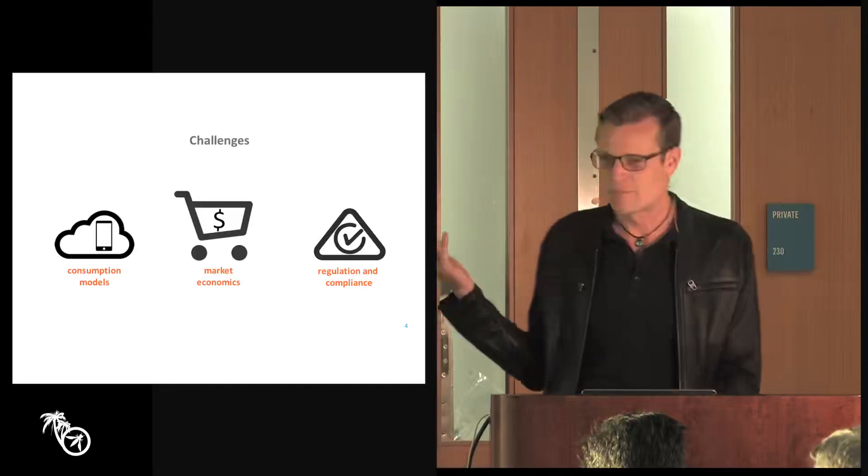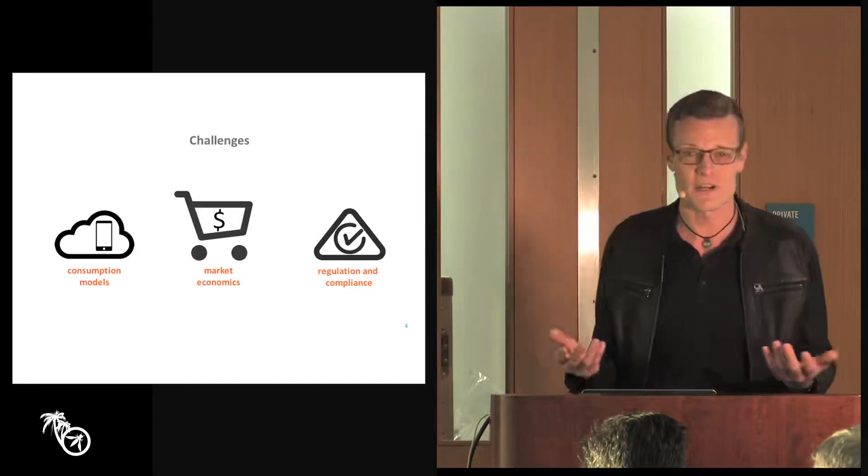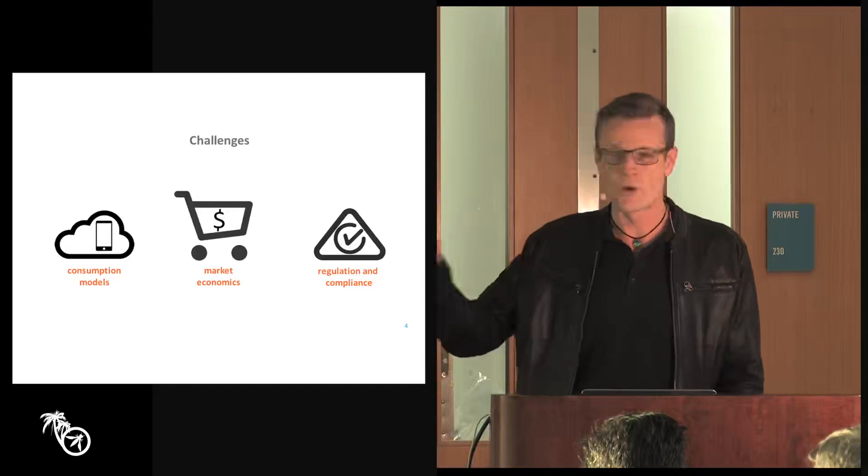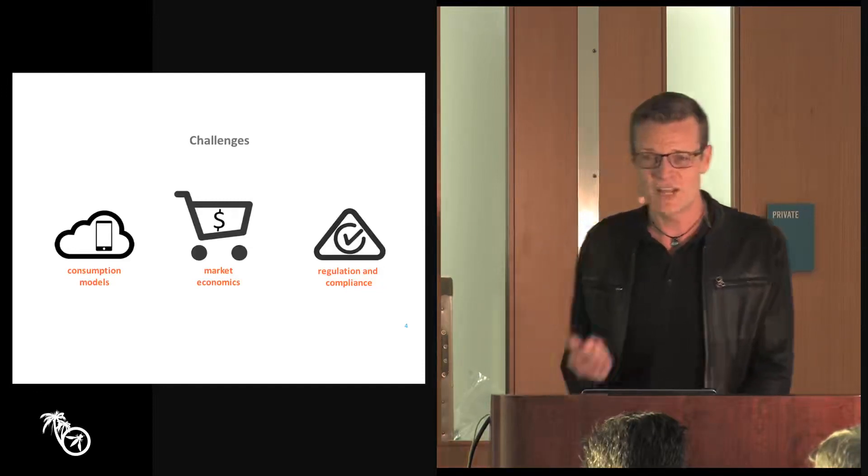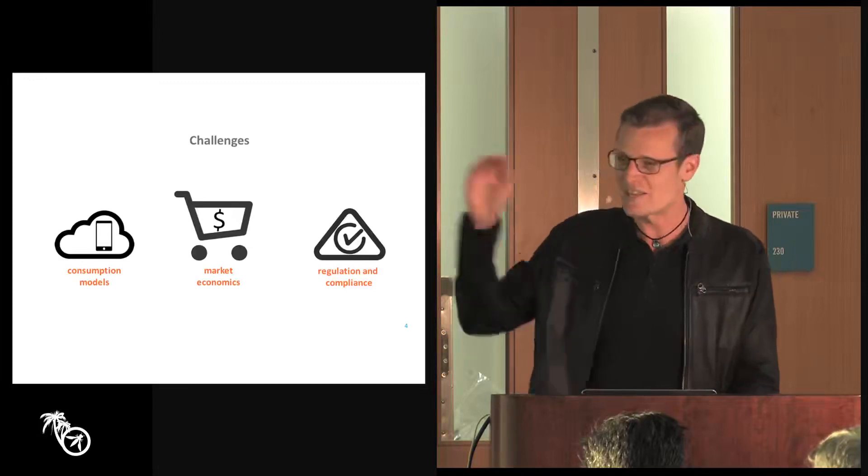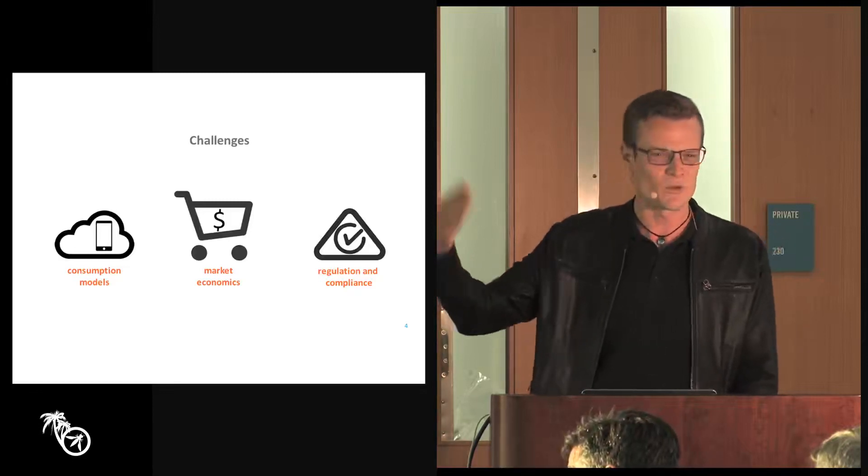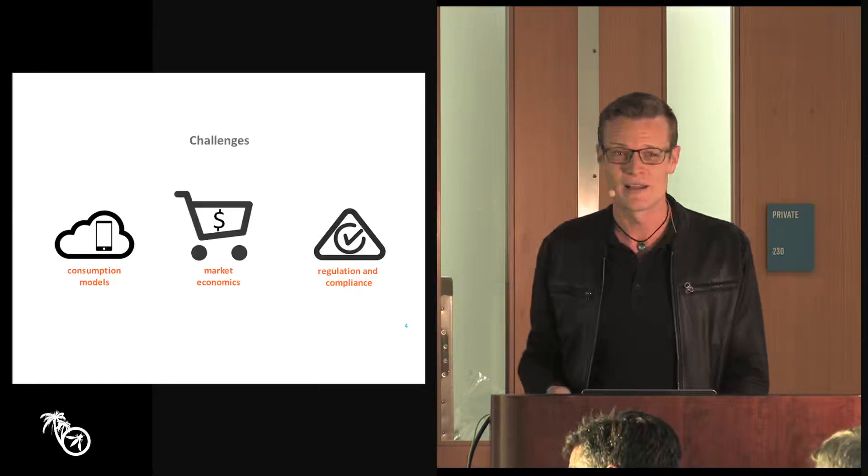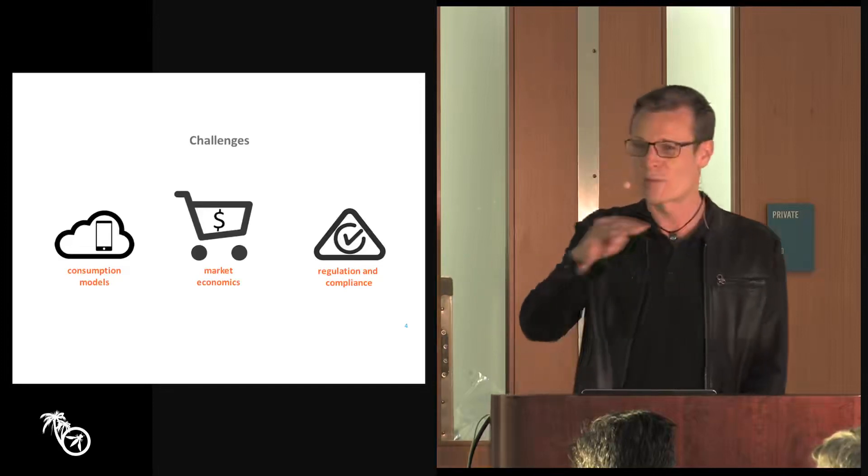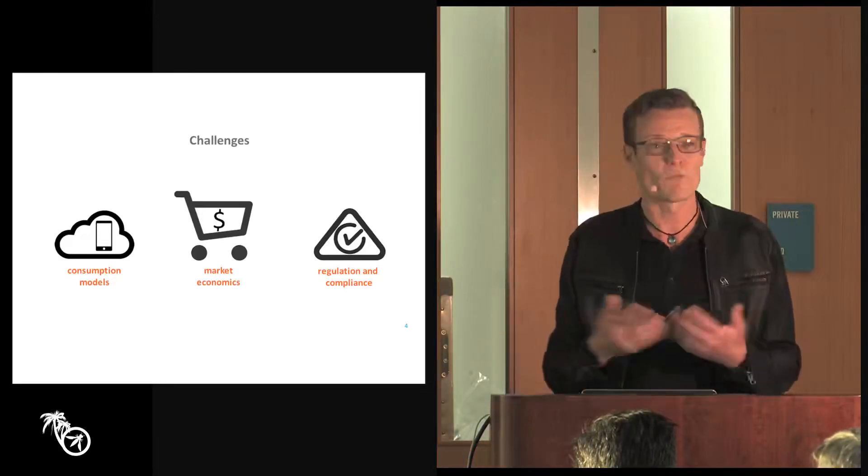And then finally, we have regulation and compliance. These external constraints placed on us sometimes are very powerful. They've done a lot to increase awareness around security and helped companies that might not know where to start define what a good lower bar for security looks like. The challenge is twofold. One, compliance and regulation trains us to strive, particularly at the executive level, for that lower bar. And second, it normalizes the industry. So more and more companies look the same in terms of the lower bar that they're meeting, and that makes it easier for adversaries to attack us as an industry.